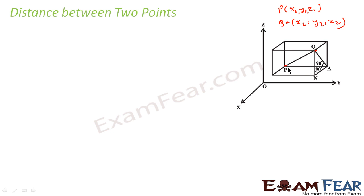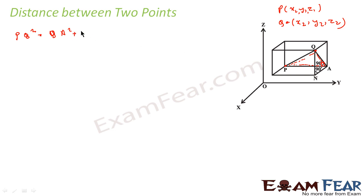Looking at this triangle, we can say that PQ² is equal to PA² plus AQ², because this angle is 90 degrees. So PQ² is equal to QA² plus PA². This is the first equation.